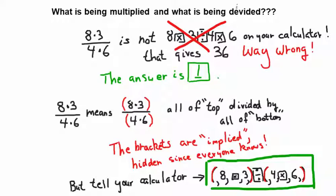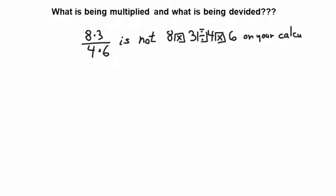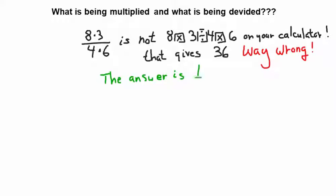Alright. Here's another biggie. What's being multiplied and what is being divided? If I said eight times three divided by four times six, I hope you know the answer is one. But you know what? I get numbers. People type in eight. And then they put the times button on their calculator. And then they put the three. And then they put the divide button on their calculator. And then they put the multiply button on their calculator. And then they put the six. Then they end up with some crazy number on their calculator that says the answer is 36. And that's not the answer. 36 is not the answer. That's way wrong, man.